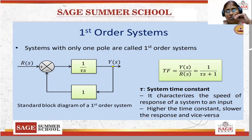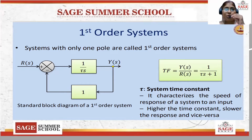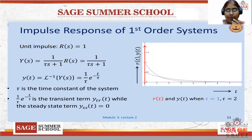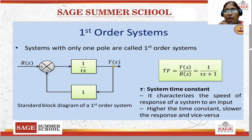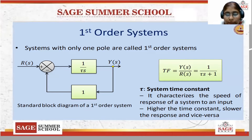Higher the time constant, slower the response. If the time constant is less, the speed of the response will be high. For the analysis of systems, different time functions are provided as inputs: unit step function, impulse function, and ramp function.